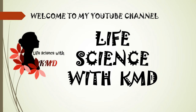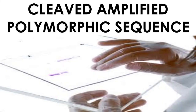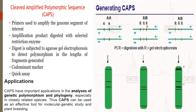Welcome to Life Science with KMD. Cleaved Amplified Polymorphic Sequence (CAPS) is a PCR-based marker. First, primers are used to amplify the genome segment of interest. Then, the amplified product is digested with a selected restriction enzyme.